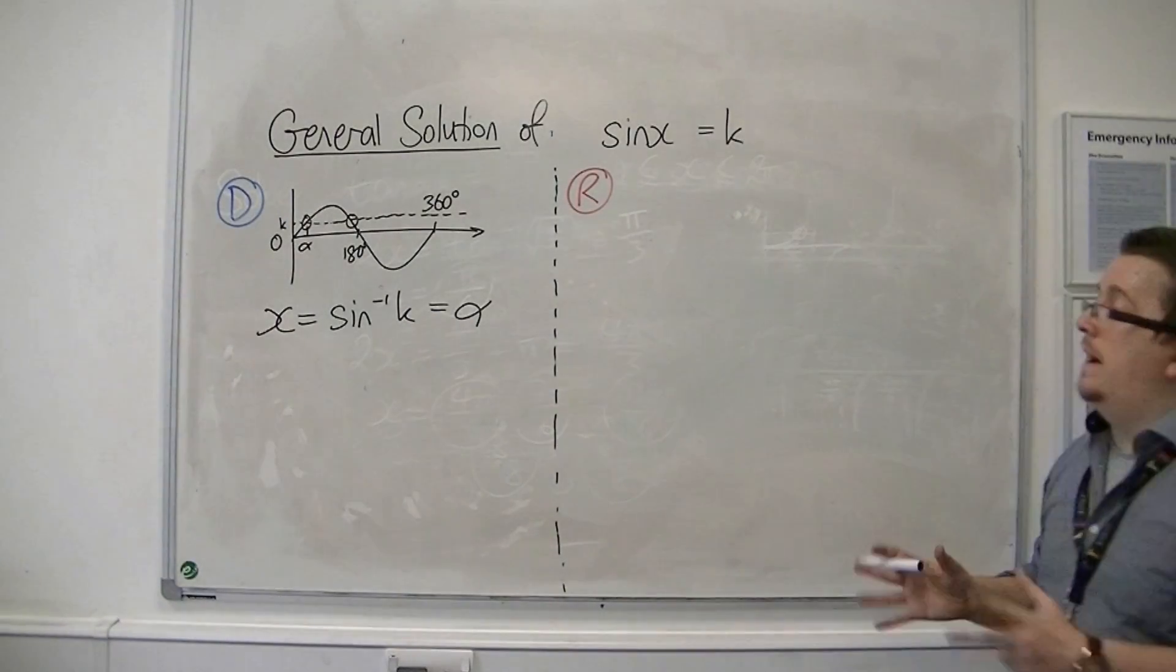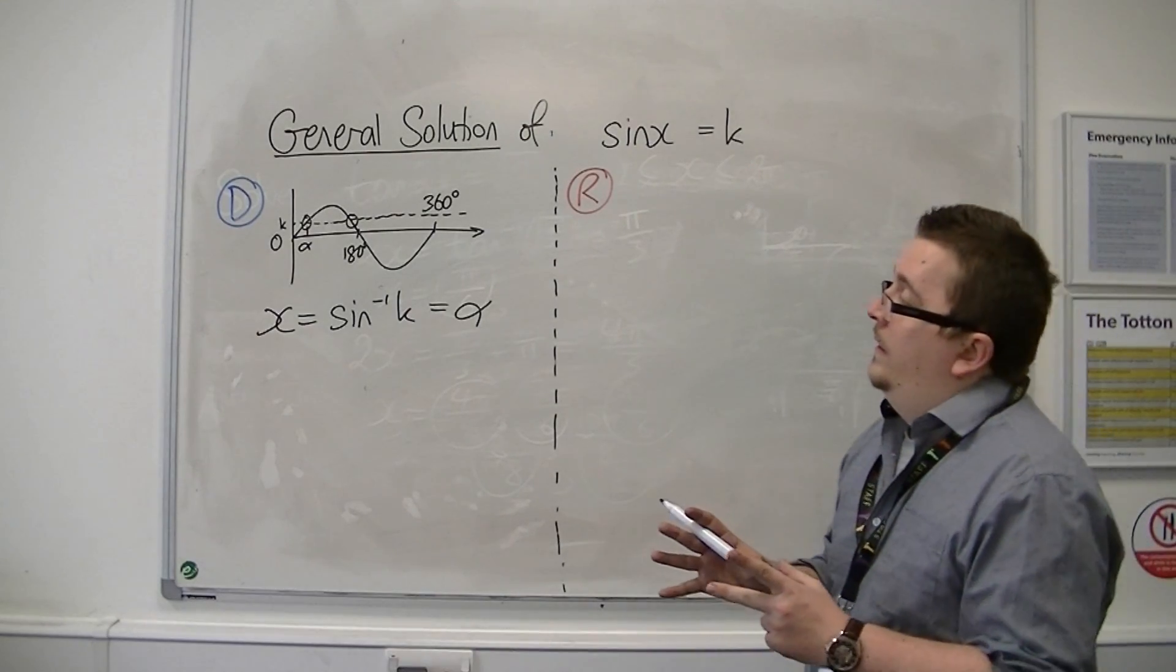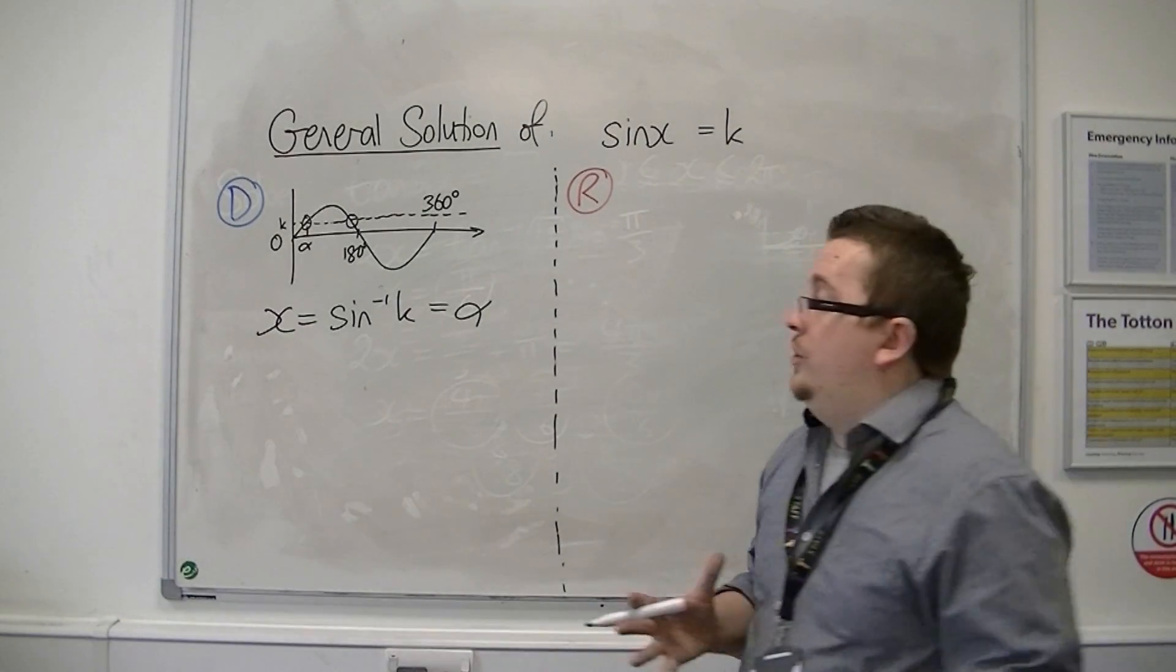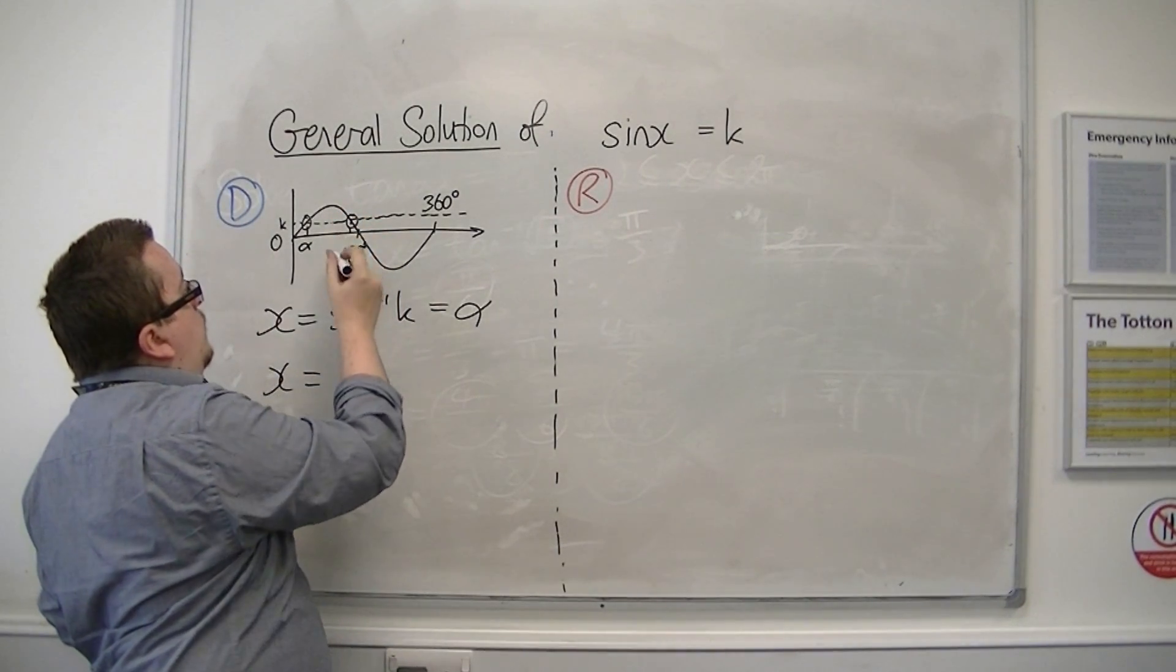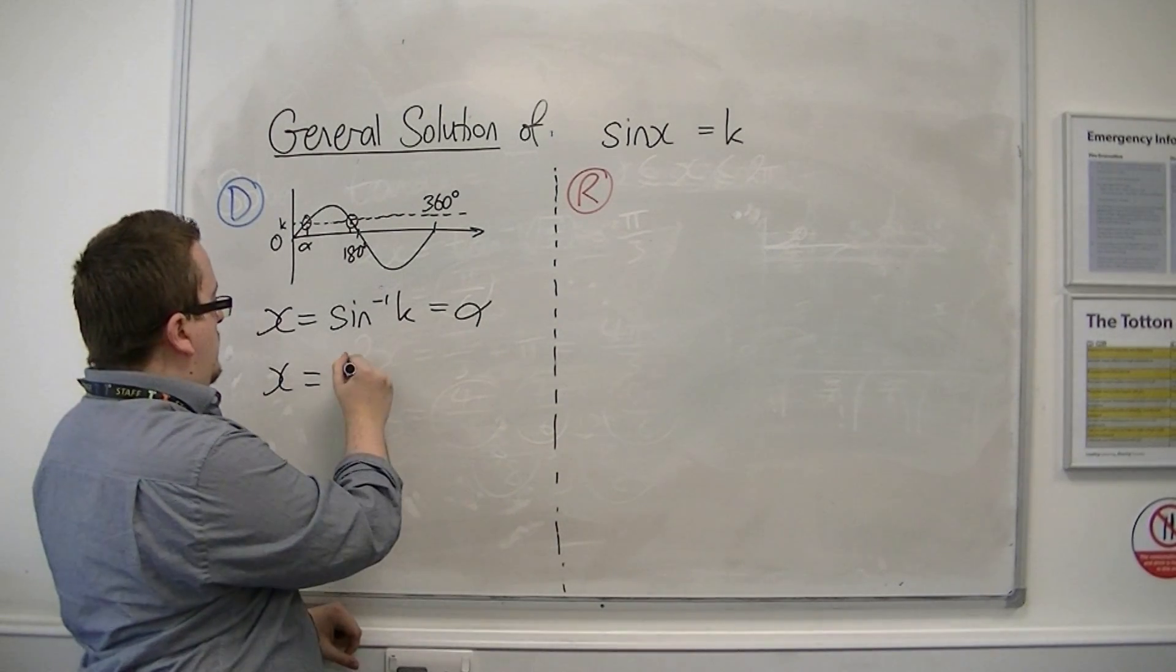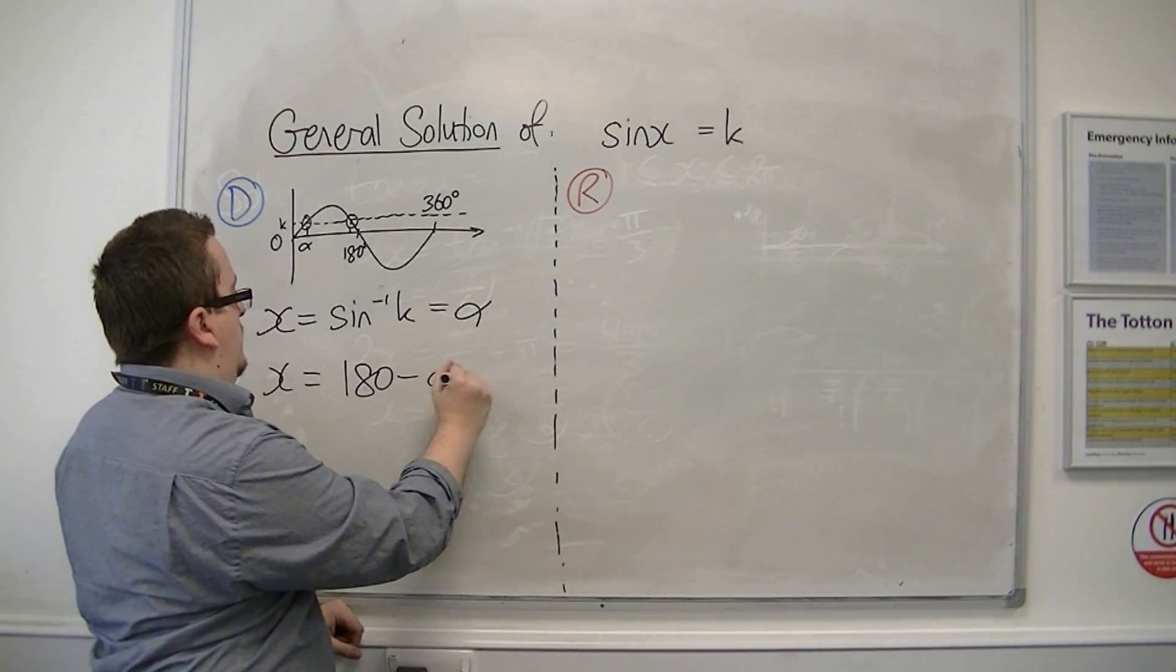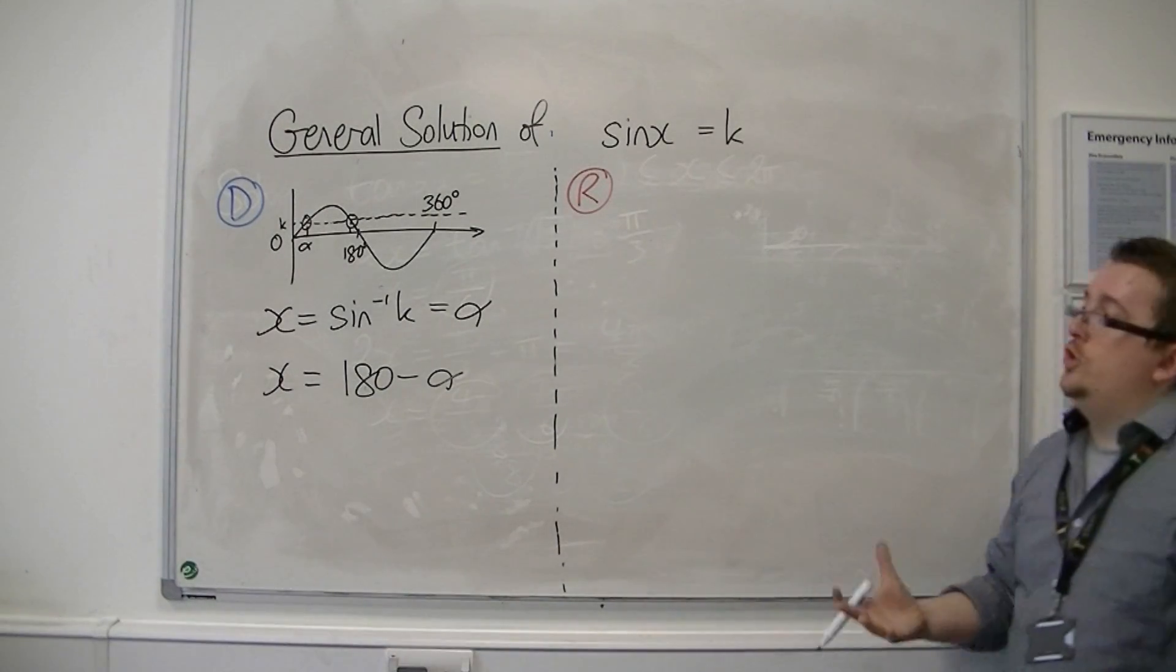I don't know what it is, it doesn't really matter for the moment. I'm just going to use a letter for it. Then the other solution is going to be this one here, which can be found from doing 180 take away alpha. So we've got these two solutions.